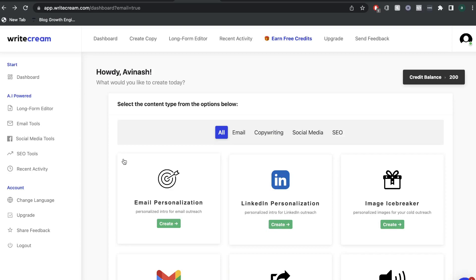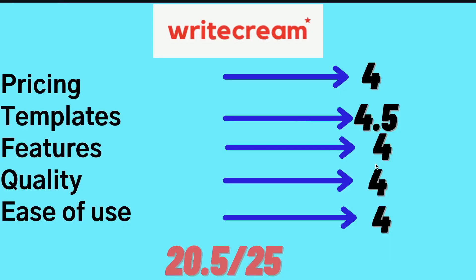Overall, I'm very impressed by WriteCream. I would give it an overall rating of 20.5 out of 25. The pricing is really good, especially if you get the AppSumo lifetime deal. For templates, they have some of the best I've seen in any AI copywriter. The features are pretty decent, but I would like maybe some more SEO or optimizing features included. For quality, it's also pretty decent, but I want to do some more tests before giving it a higher or lower score — right now it's at a 4, but I'll compare it with other AI copywriters. It's very easy to use, so I give that a 4 out of 5. In total, 20.5 out of 25 is a really, really good score. I highly recommend grabbing the lifetime deal if it's still available, because it's an absolute steal for such a powerful AI copywriter.